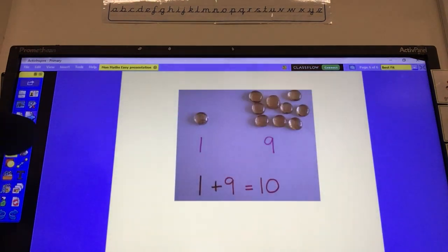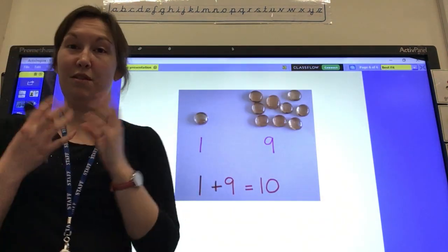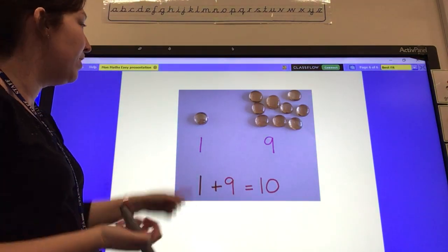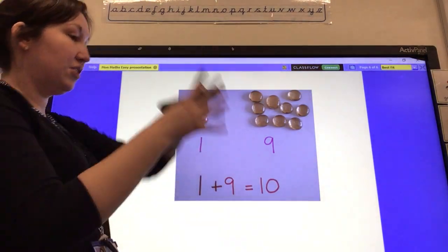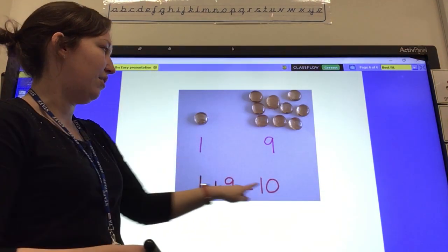I had a go at home as well and I had some really shiny beads in one of my candle jars, so I used mine. I started off with 10, I split them into two groups, I wrote the numbers and then I wrote the number sentence.